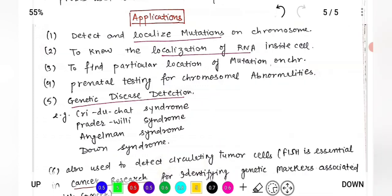Second, FISH can determine the localization of RNA inside the cell. If we want to know whether a particular gene is being expressed or not, we can locate the mRNA responsible for it within the cell. Thus, FISH helps visualize gene expression by detecting RNA molecules within the cell.